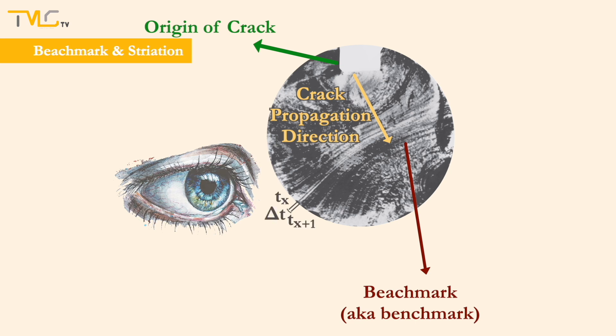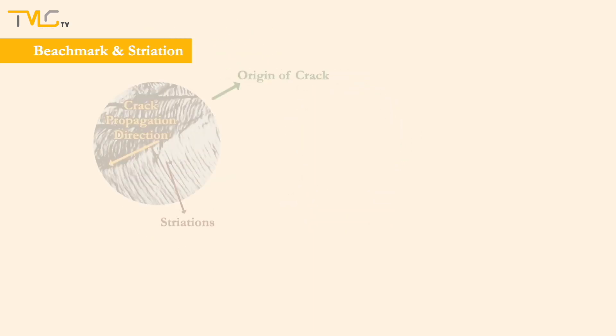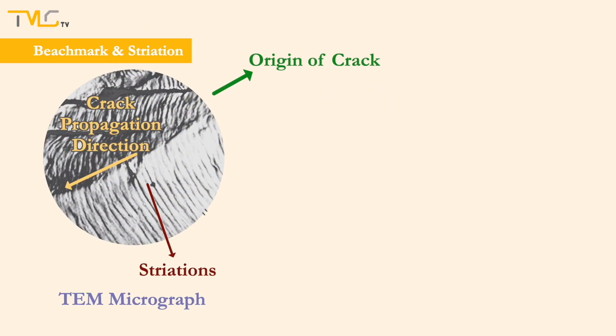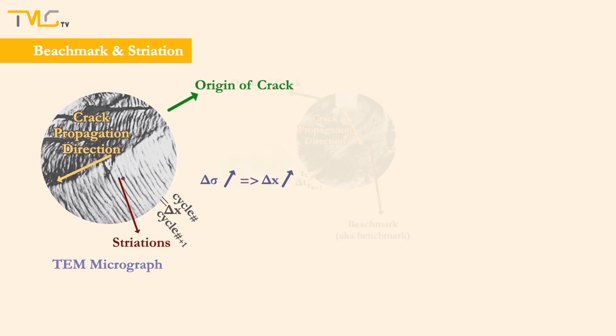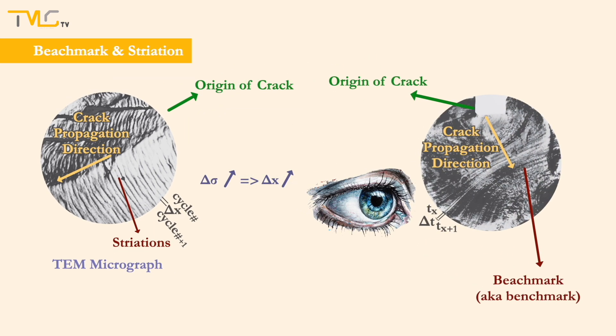Fatigue striations, on the other hand, are microscopic and can be observed under electron microscopes. Each striation mark represents the propagation distance of a crack during a single loading cycle. Striation width increases with increasing stress range. Although beachmark patterns and striations look alike, they differentiate in terms of size and origin with different fracture characteristics.